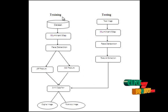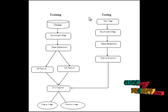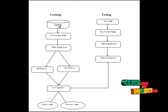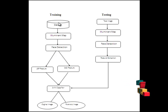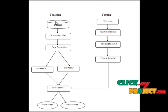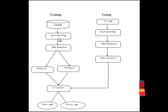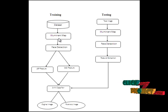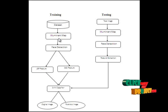Our process has two stages: the first is the training stage, and the second is the testing stage. In this process, the whole database image is passed to the illuminant map. For identifying the illuminant map, we convert the image from one color form to another.